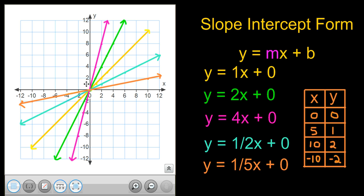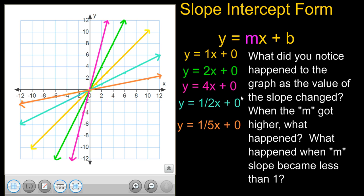So, now, when we take a look at these graphs, we can see the light blue and the orange and how they are a slope of less than one. And notice how they are kind of slanted differently. And then notice the green and pink lines that go more in an upward direction, or downward, depending on how you're looking at it. And their slope is greater than one. So, I want you to think about this. What did you notice happened to the graph as the value of the slope changed? When m got higher, what happened? And then again, what happened when m, or the slope, became less than one? Well, I hope that helped you better understand how slope affects the graph of a line. See ya!